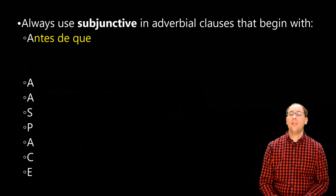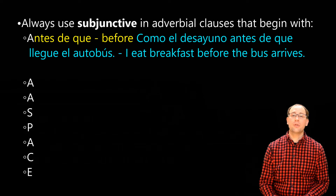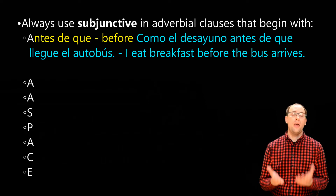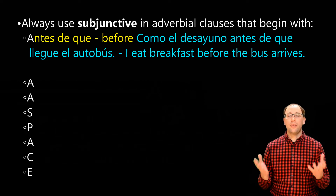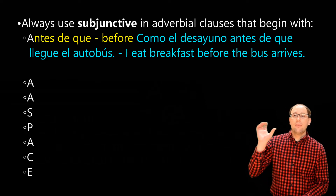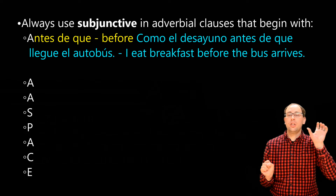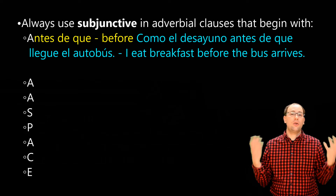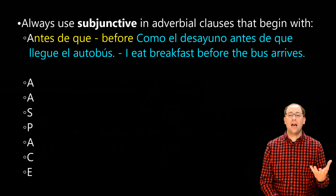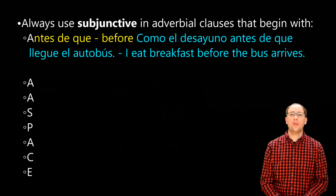The first A is 'antes de que,' meaning 'before.' We can see that in the sentence: 'Como el desayuno antes de que llegue el autobús' — I eat breakfast before the bus arrives. At the time of the main clause when I'm eating breakfast, I have no certainty of completion of the next action — the bus arriving — because it hasn't happened yet; it's a future action, even though present tense is used in both clauses.